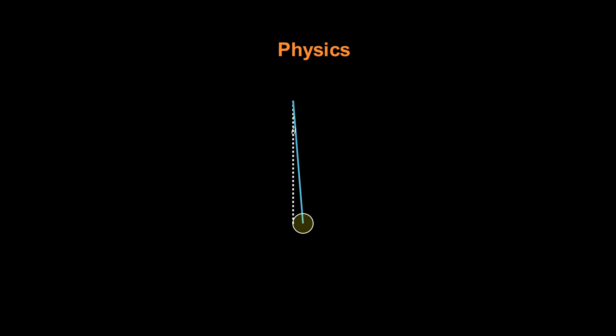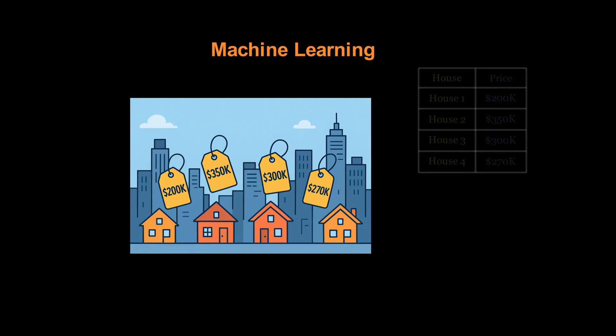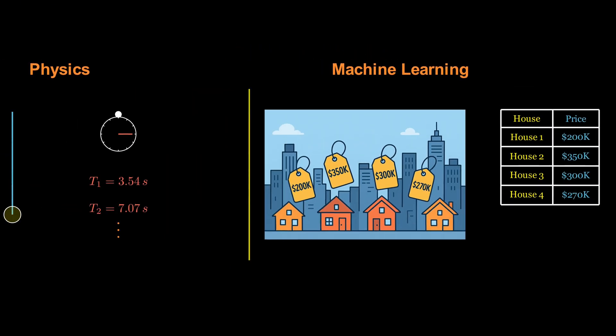Let's start with something familiar. Imagine we're measuring the period T of a pendulum using a stopwatch. That's the physics example. Now, in machine learning, think about measuring house prices in a city.